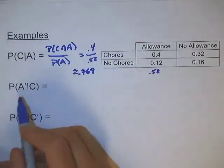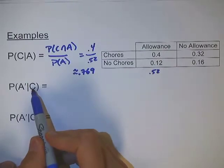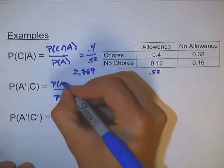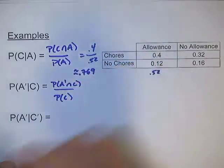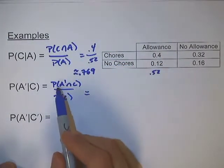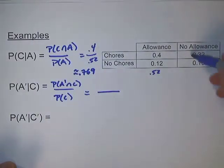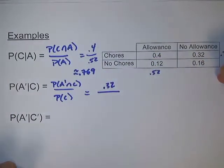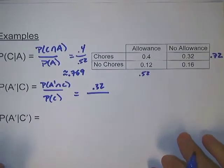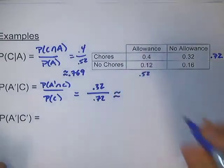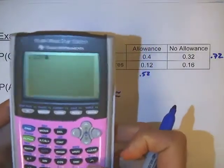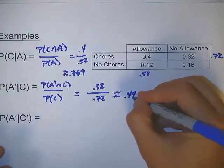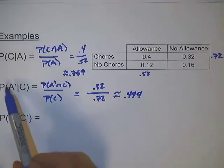Now the probability of not getting an allowance given they do chores: P(A' | C). The denominator is P(C) = 0.72, and the numerator is P(no allowance and chores) = 0.32. So it's 0.32 divided by 0.72, which equals about 0.444. There's a 44.4% chance of somebody not getting an allowance given they do chores.